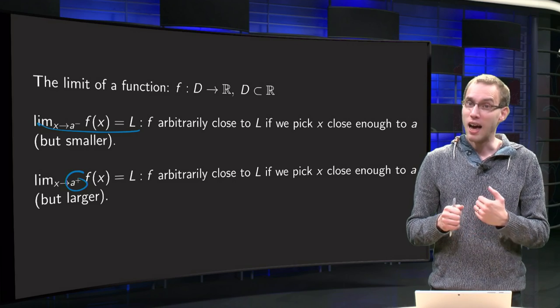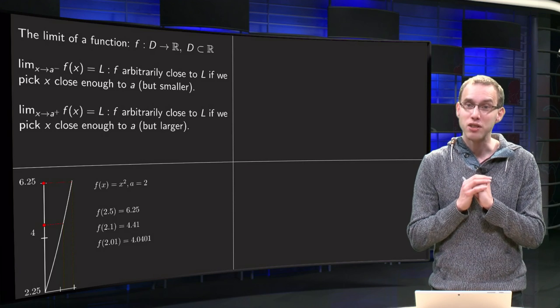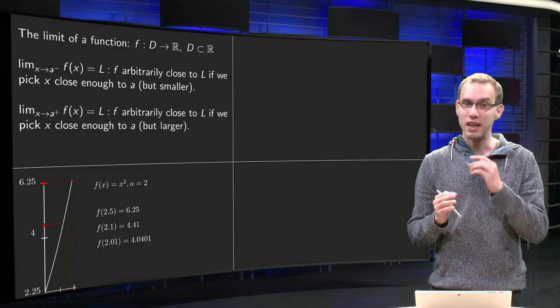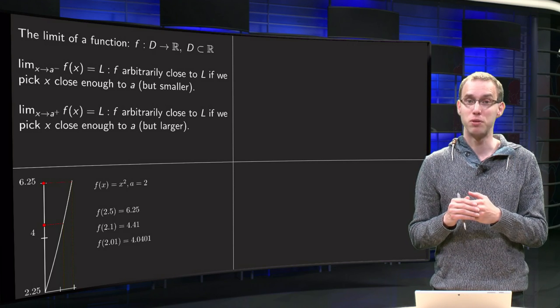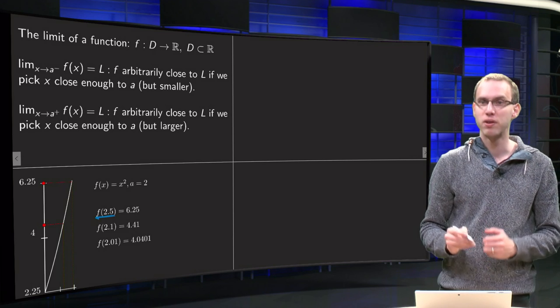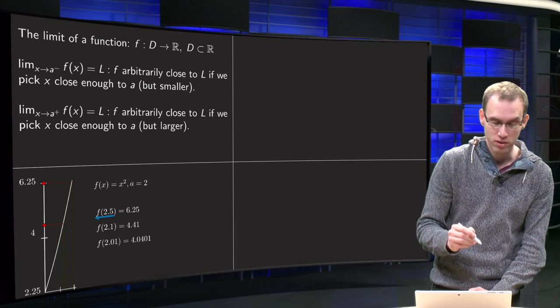So how does this look in an example? Let's take the function f equals x squared and we will take a equals 2. What happens if we go from above to this point a? So we start at x equals 2.5. We plug in 2.5, 2.5 squared equals 6.25.